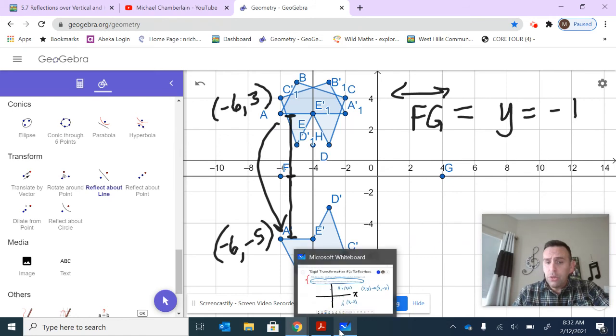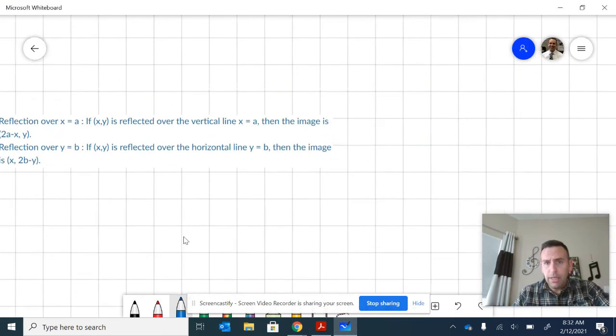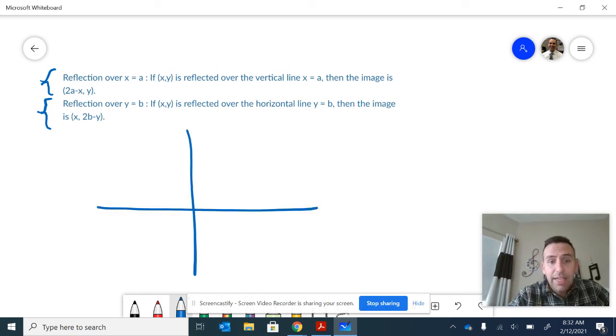In general, here's what I want you to notice. Let's take a look at this statement here: reflection over x equals a versus reflection over y equals b. There is a formula for both. The idea is that if you have a line, I'll just do one of them. If you have the line x equals a, if you have an a value and you have a line x equals a right there. If you take an image, I'm just going to draw a blob there, and you reflect that.